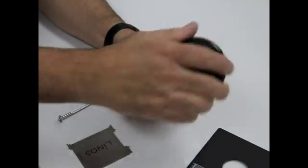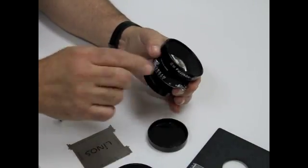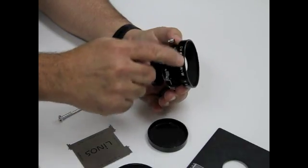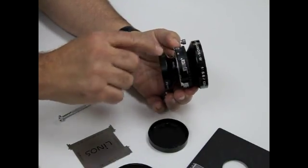Now you'll notice on this 4x5, this 135 millimeter lens, there's a front element, there's a shutter, and there's a rear element.